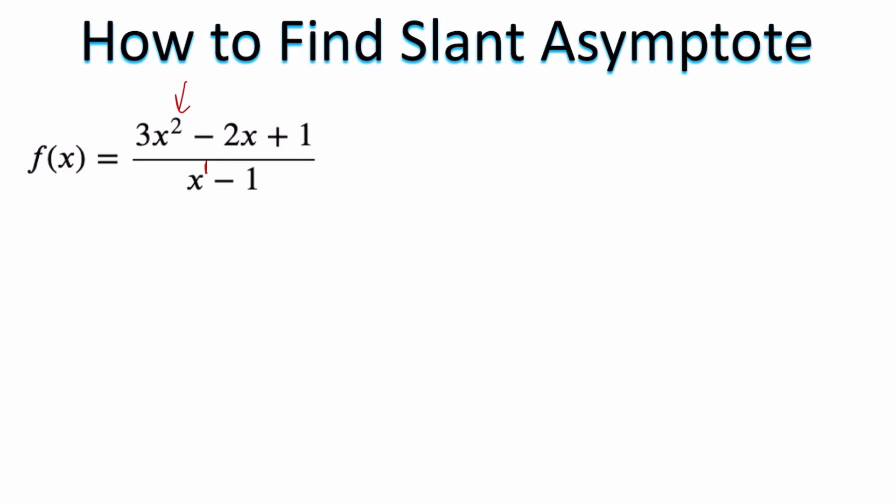Now if the degree of the numerator is greater than the degree of the denominator by exactly one, bingo, you found yourself a slant asymptote.